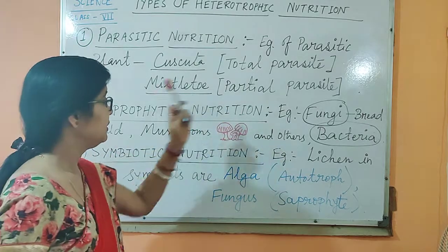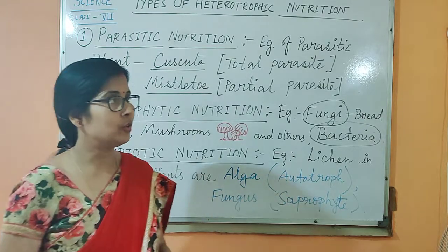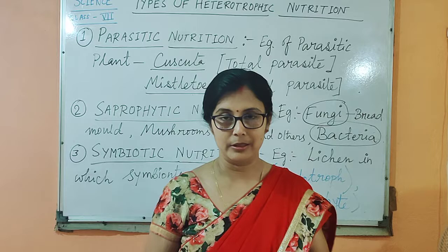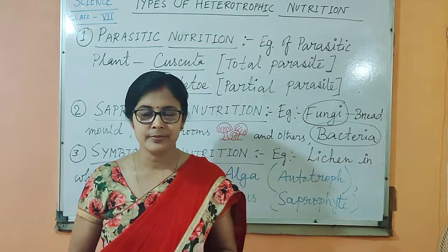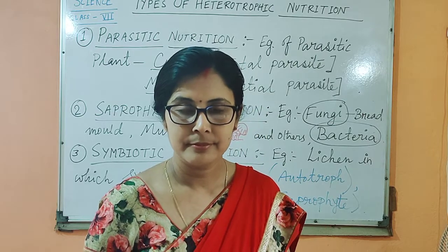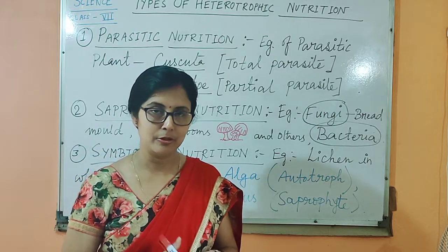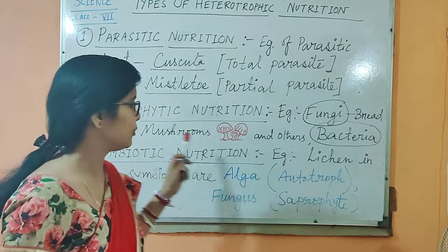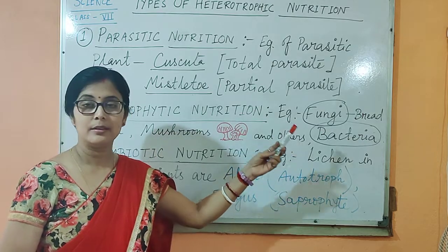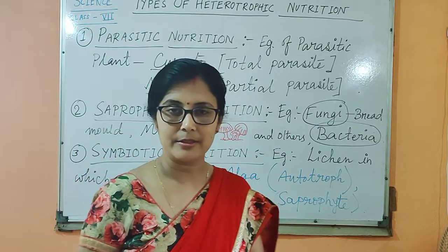So, fungi and bacteria. There are certain bacteria in the environment which contain chlorophyll, called bacterial chlorophyll, and those bacteria are capable of photosynthesizing. But most bacteria do not contain chlorophyll, therefore they follow the saprophytic mode of nutrition. They obtain their nutrition from dead and decaying materials.